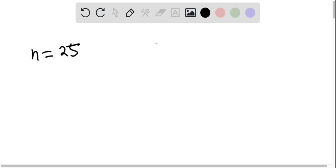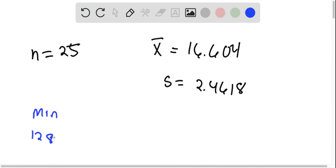But let's look at the data and then we'll answer some of the questions. We find that the mean of the values is 16.604, and the standard deviation is 2.4618. And again, we have 25 pieces of data. Here is our five-number summary. We know that the minimum value is 12.885. Q1 is 15.045.